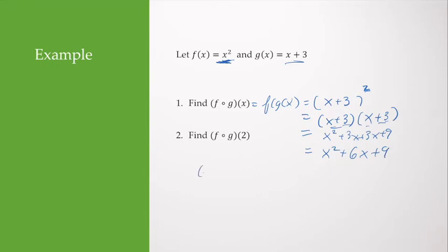So I have x squared plus 6x plus 9. Now if I want to know f composed with g of 2, I'm going to take 2 squared, I'm substituting in 2 for x, 2 squared plus 6 times 2 plus 9. So 4 plus 12 plus 9, our answer would be 25.